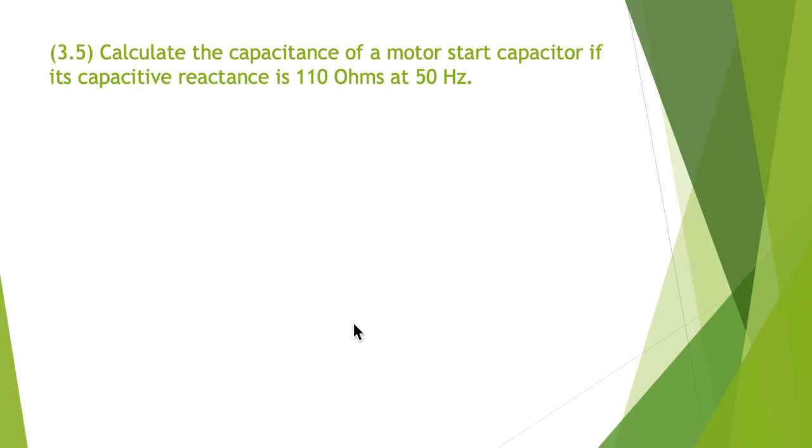3.5: calculate the capacitance of a motor start capacitor if its capacitive reactance is 110 ohms at 50 hertz. The formula for capacitive reactance XC is 1 on 2 pi FC.